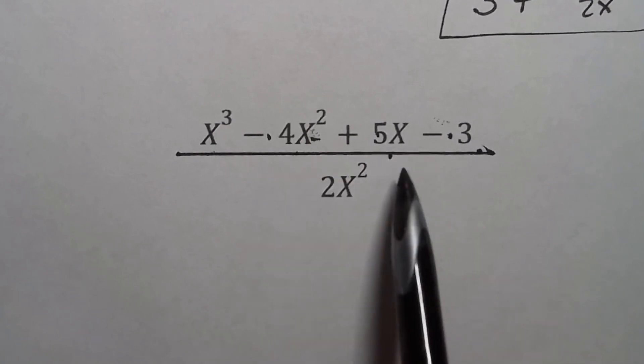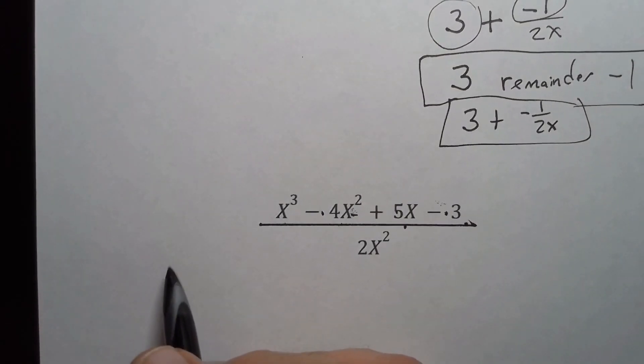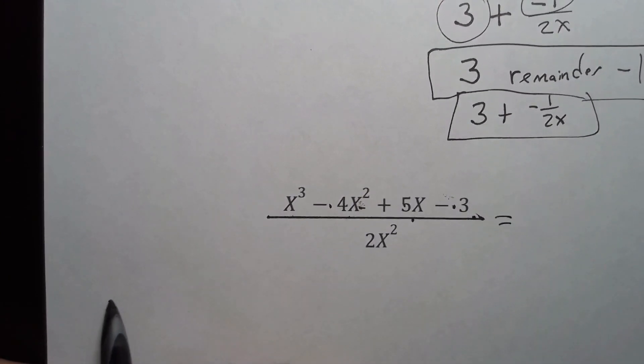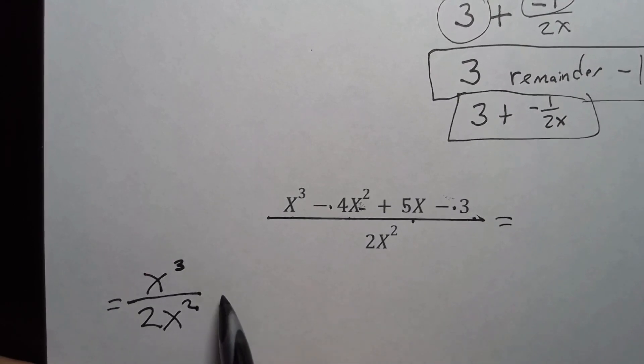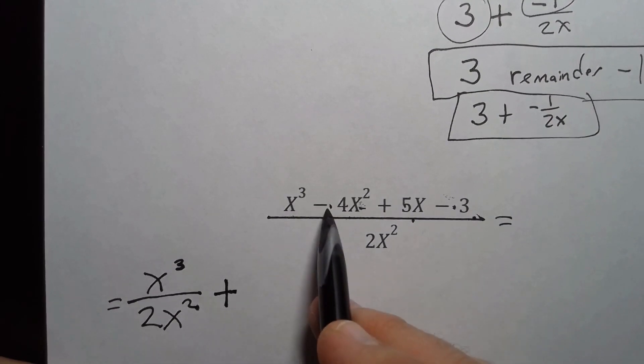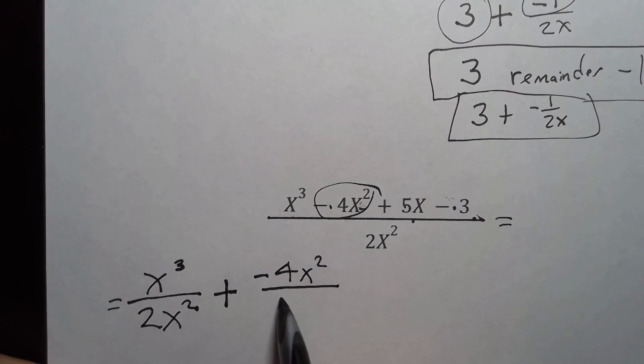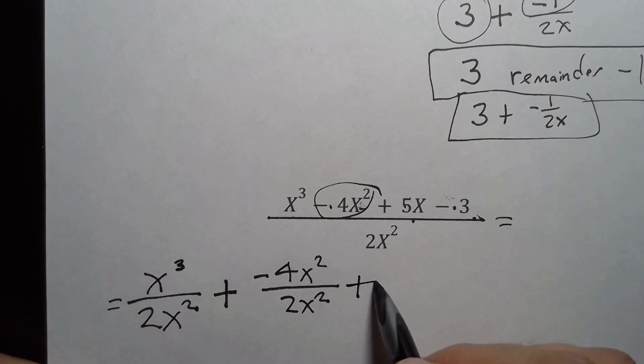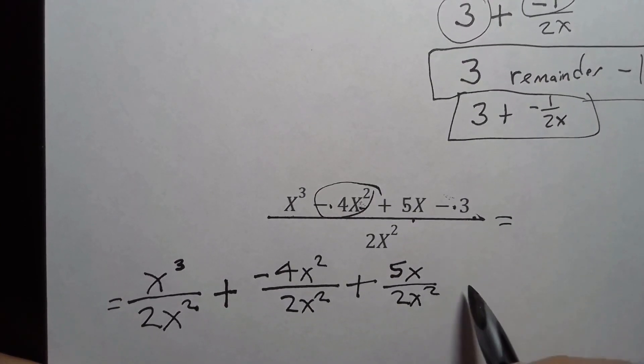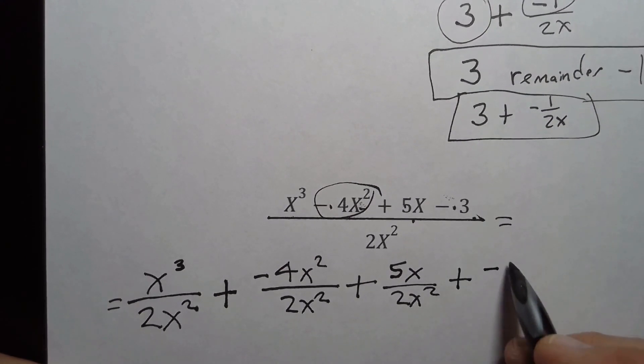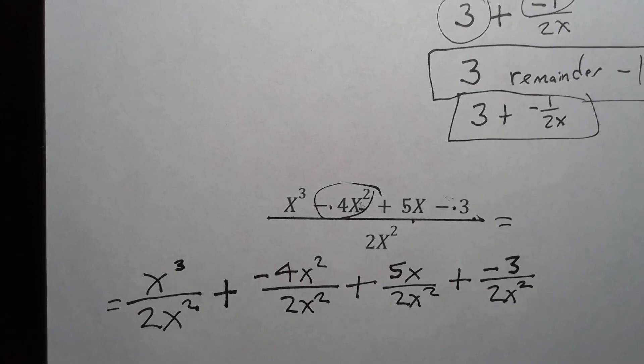I'm going to rewrite this the same way, separating out each of the terms with the same divisor on the bottom. It equals x³ over 2x², and remember the important pro tip is always add the terms regardless of the sign. So I'm going to write this term on top here, negative 4x² all over 2x². I'm going to write the next one as addition: I've got 5x on top and 2x² on the bottom. And again using our pro tip, I'm always going to add it even though I've got a negative term up here, negative 3, and again over the same 2x².